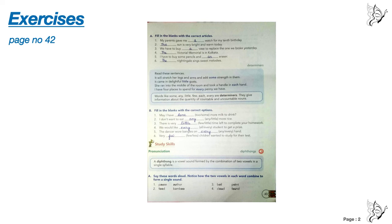Number four, we would like every student to get a prize. Number five, the dancer wore bangles on every hand. Number six, very few children wanted to study for their test.